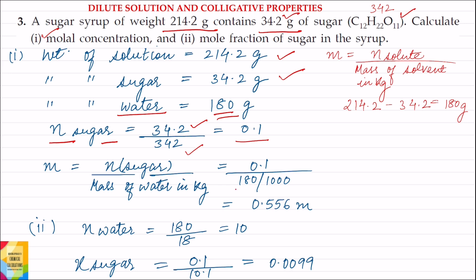Now we need the mass of solvent in kg, so we convert 180 grams to kg: 180 divided by 1000 kg. So the molality of the solution equals moles of sugar divided by mass of water in kg, and this equals 0.556 mol/kg.